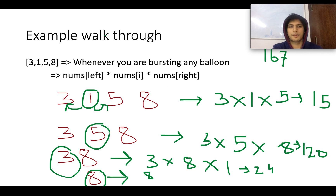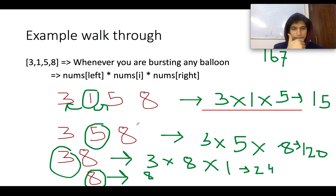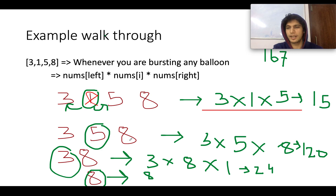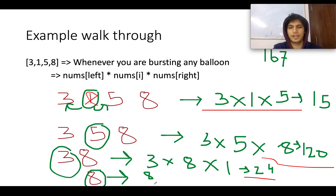Let's walk through the example. You are given [3,1,5,8]. You burst balloon with value 1, and the adjacent balloons are 3 and 5, so you got 15. Then you are left with [3,5,8], you burst the middle balloon and got 120. Then you burst 3 leaving 8, getting 24, and the last one is 8. The total of all this is 167.